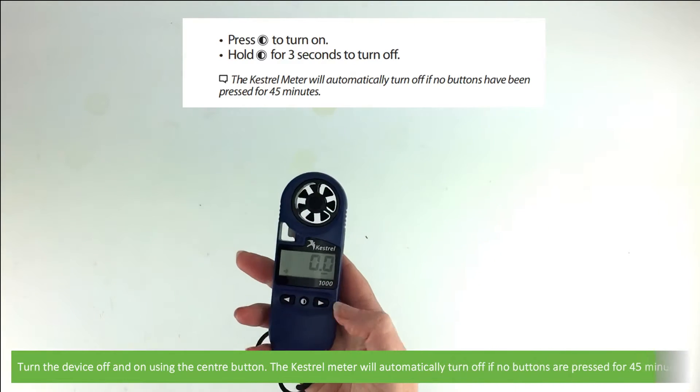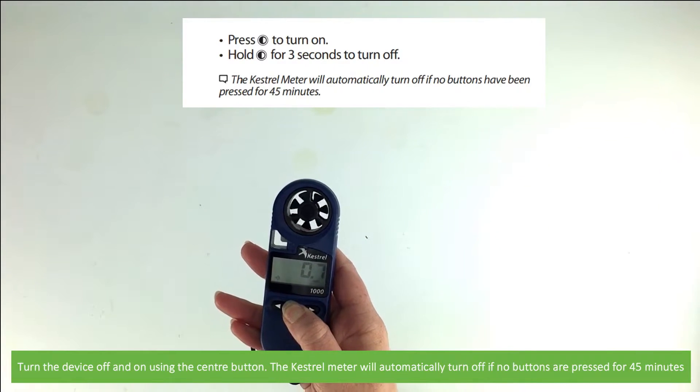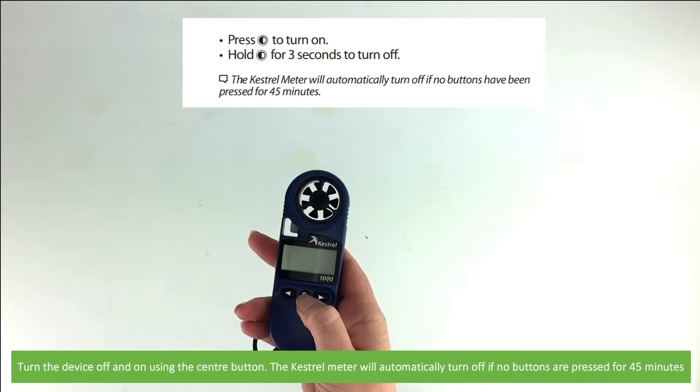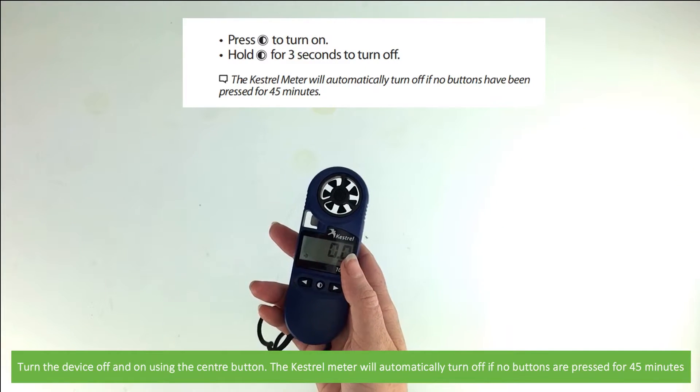You can turn the device on and off using the center button. The Kestrel meter will automatically turn off if no buttons are pressed for 45 minutes.